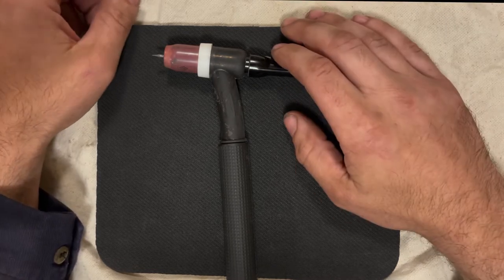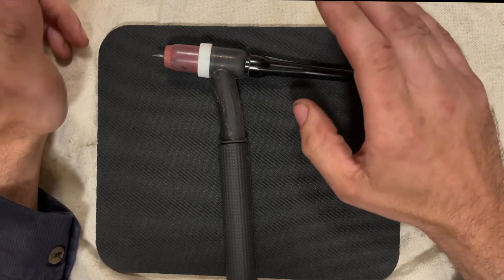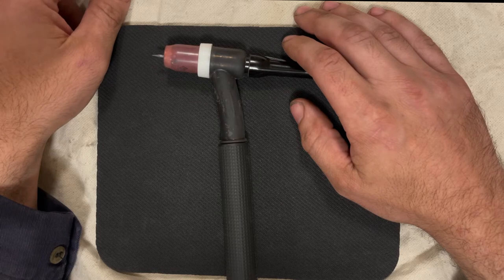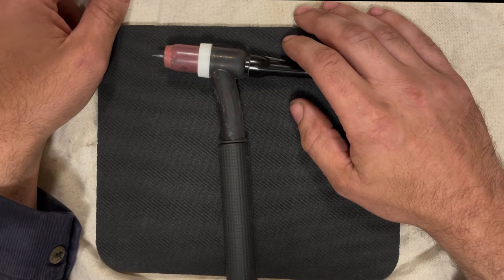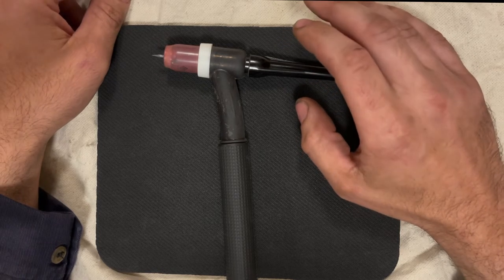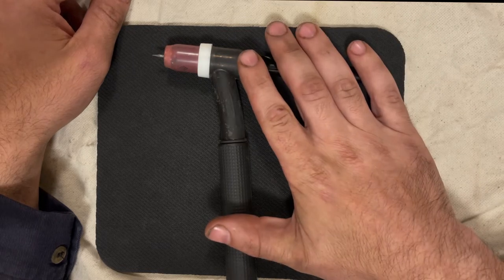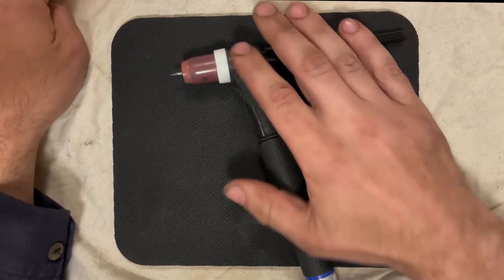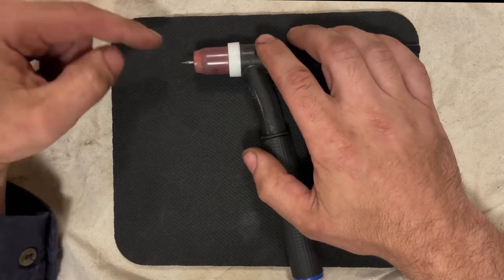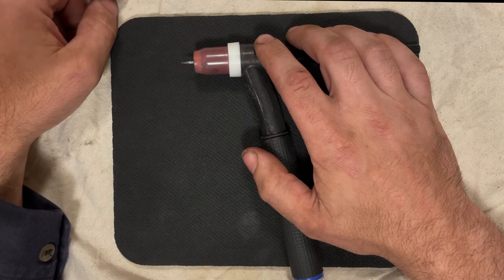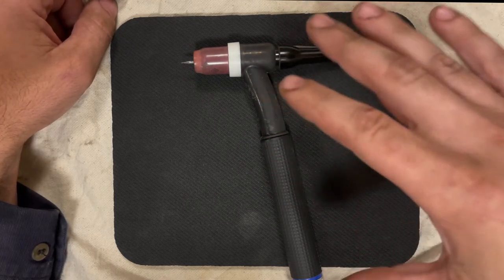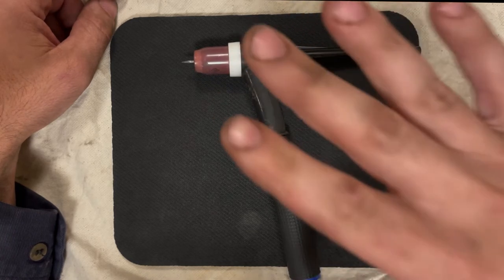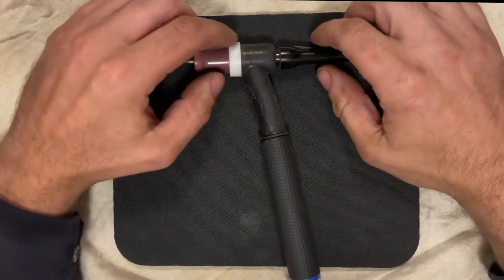TIG welding, which stands for Tungsten Inert Gas, is a welding process in which you use electricity to create heat in order to melt metal together. What I have in front of me here is a TIG torch. This is what actually passes electricity to the metal through the tungsten. We'll start by taking apart this torch and I'll talk about the components as well as how it works.